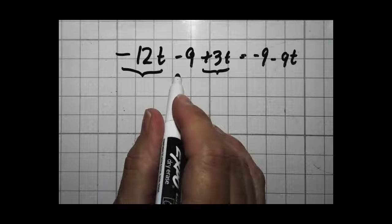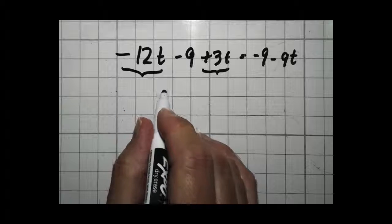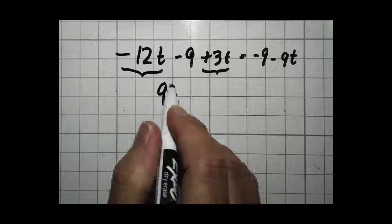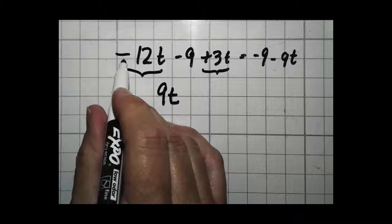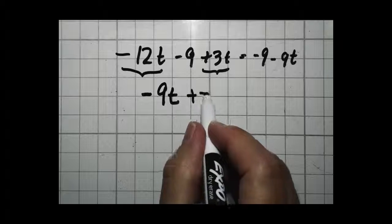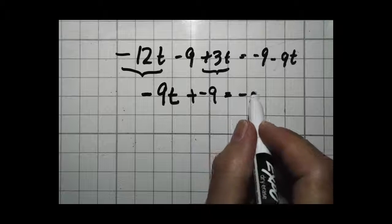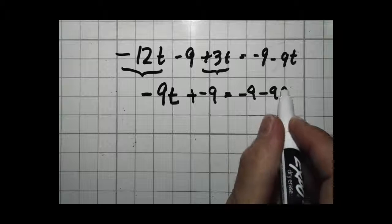Negative 12 and 3. Different signs. So we're going to subtract. 12 minus 3 is 9. Keep the sign of the bigger number. In this case, the bigger number is 12, so it's negative 9t. I'm going to put my plus sign and bring down my negative 9. Equals, on this side it's negative 9 minus 9t.